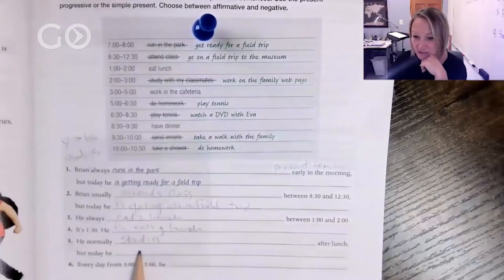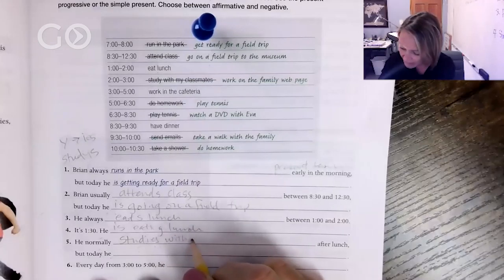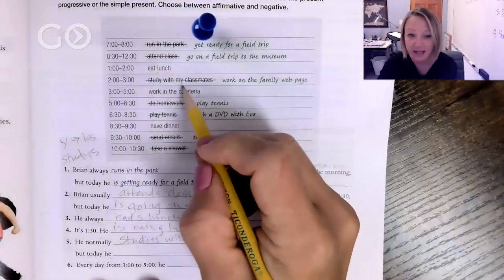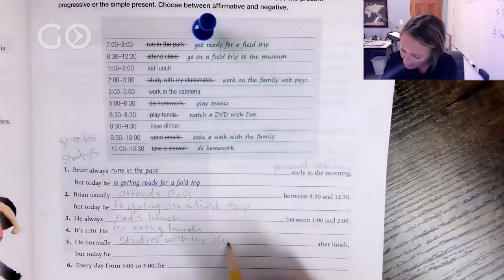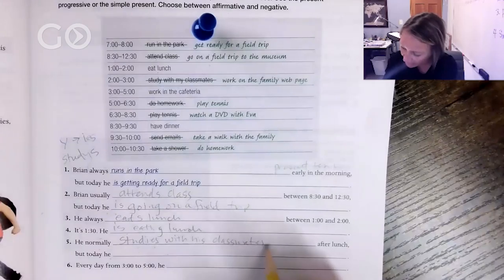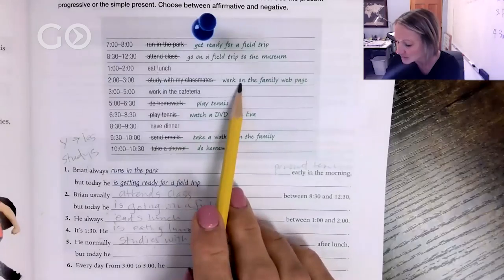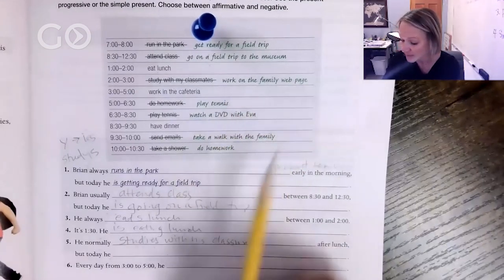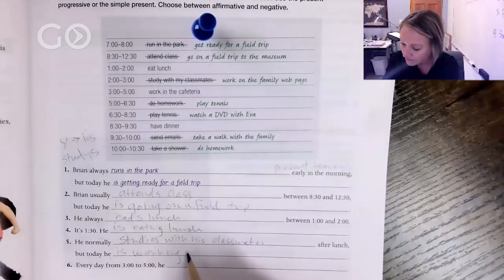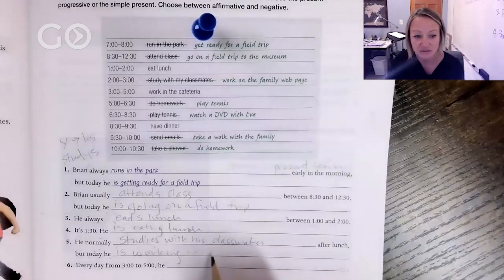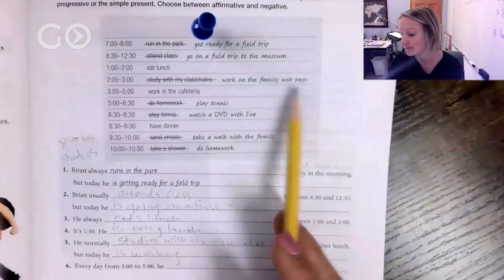So he normally studies with his—we're changing from my to his because we're talking about him—studies with his classmates after lunch. But okay, today what is he doing? He's working on the family web page. So we're gonna say he is working, and I'm gonna just do that, he is working, so you know what the rest of that sentence is. He is working on the family web page. Great.